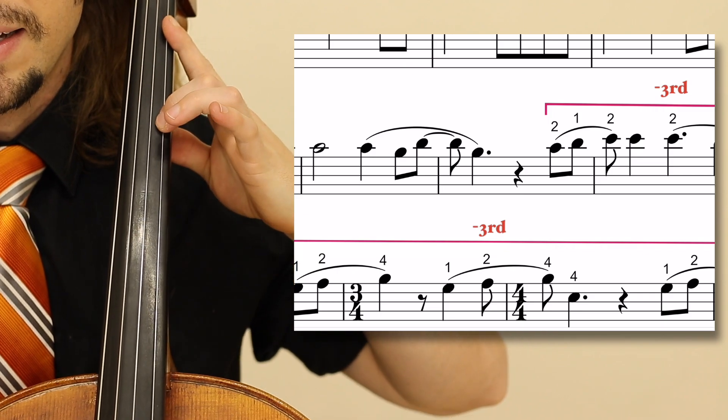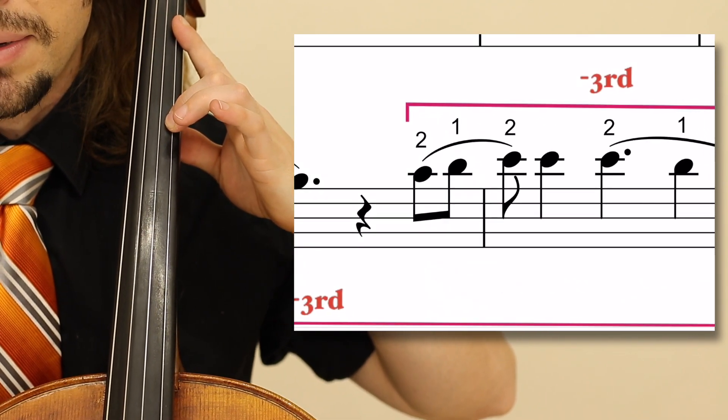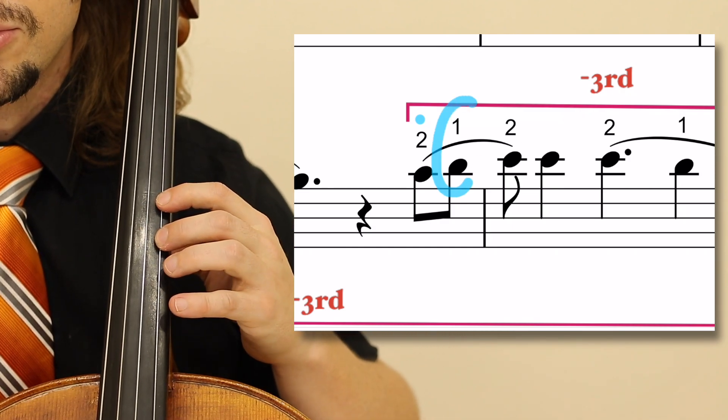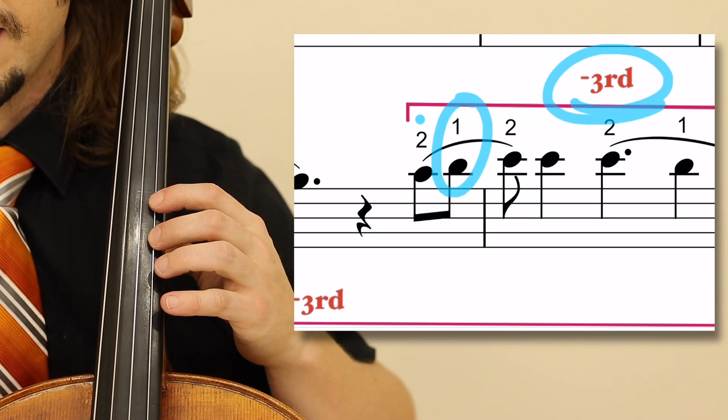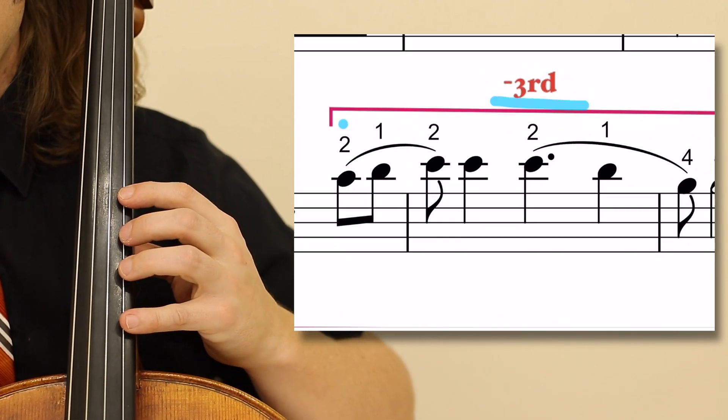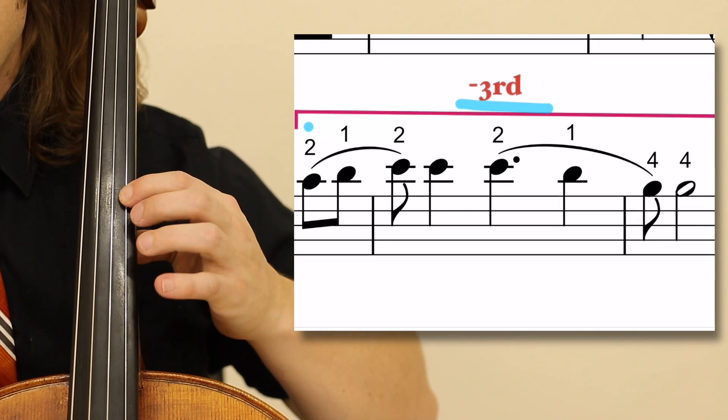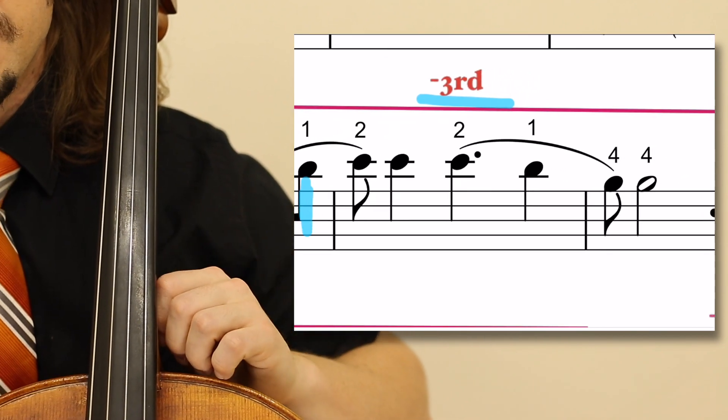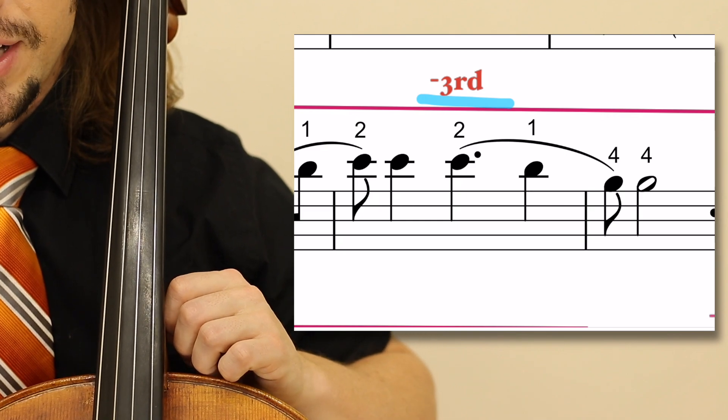Here you remain in the extended because you place your two and then shift quickly up to the lower third position here in measure nine. If you are unfamiliar with the lower third position, which starts one on the D natural, there is a card in the top right of your screen. Take a look at it and return to this video.